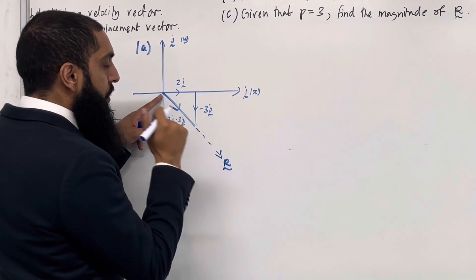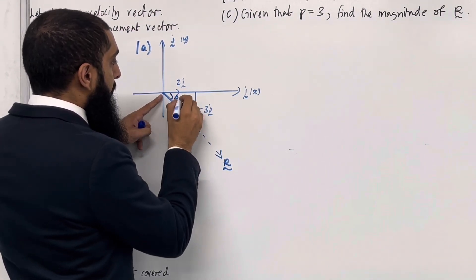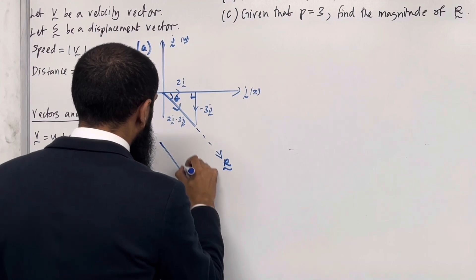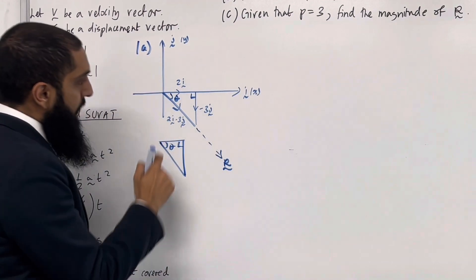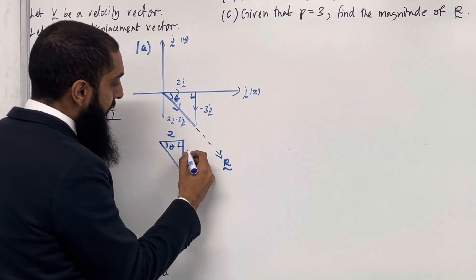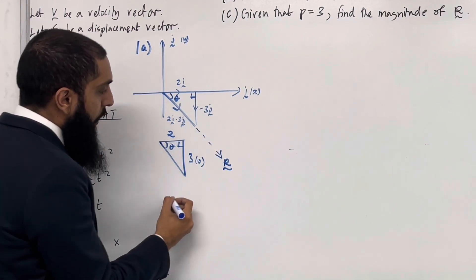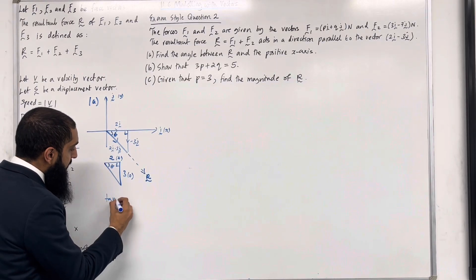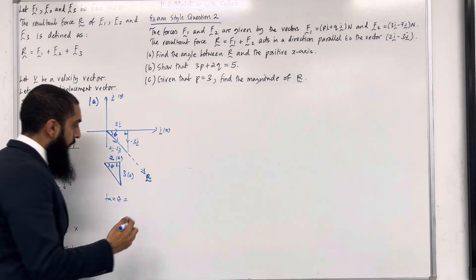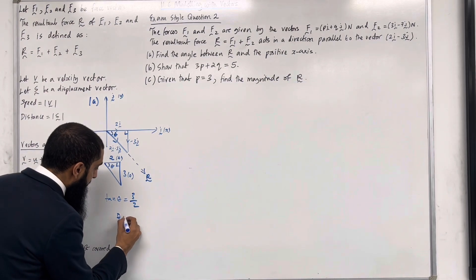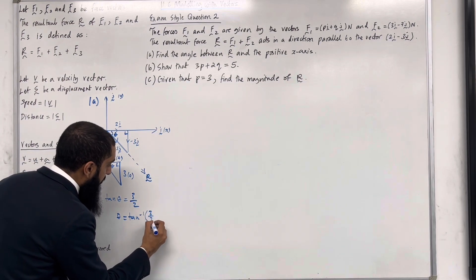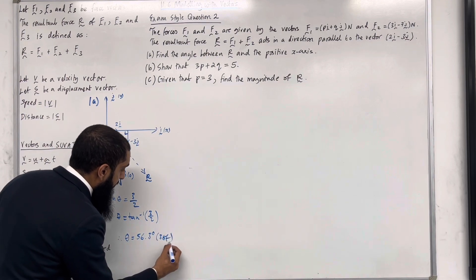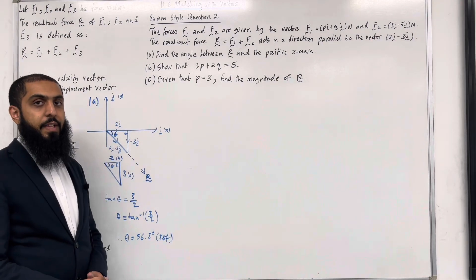The angle theta between R and the positive x-axis is the same as the angle between 2i minus 3j and the positive x-axis, since R is parallel to 2i minus 3j. In the right-angle triangle, the length 2 (from 2i) is the adjacent and the length 3 (from minus 3j) is the opposite. So tan(theta) equals 3 over 2, giving theta equals tan inverse of 3 over 2, which is 56.3 degrees to three significant figures. This completes part A of exam-style question 2.